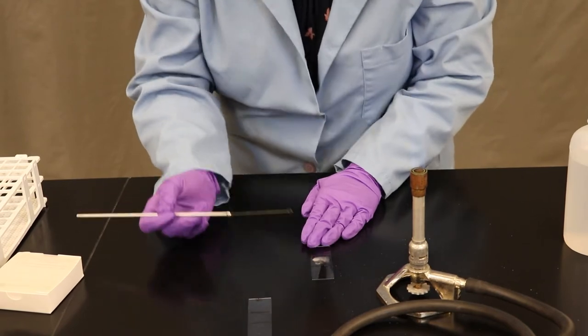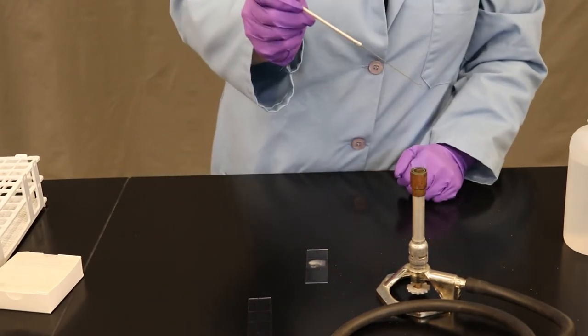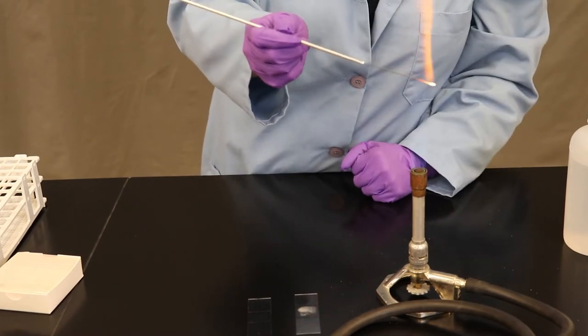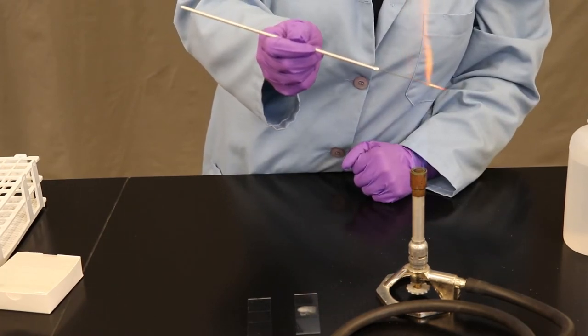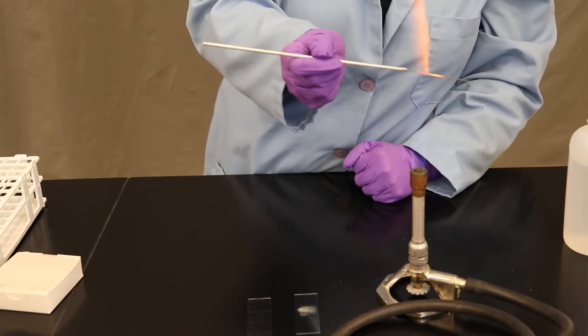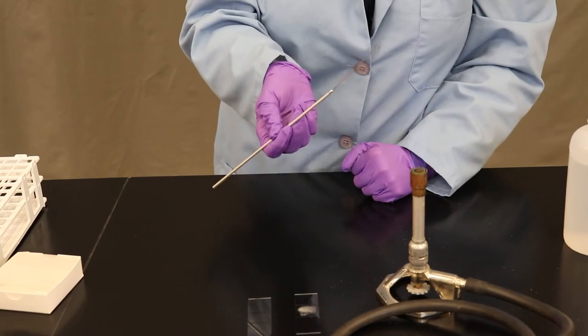Last but not least, make sure to sterilize your metal loop one last time before putting it down. Now we wait while our smears dry. Once they are completely air-dried, we'll move on to the next step.